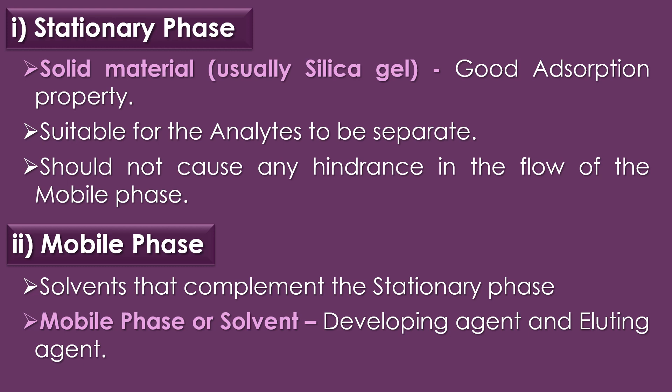The first component is the stationary phase. The stationary phase is a solid material, usually silica gel, having good absorption property. It should be suitable for the analytes to be separated and should not cause any hindrance in the flow of the mobile phase. The second component is the mobile phase, which is made up of solvents that complement the stationary phase. The mobile phase acts as a developing agent to promote separation of components in the sample to form bands, and as an eluting agent to remove the separated components from the column.